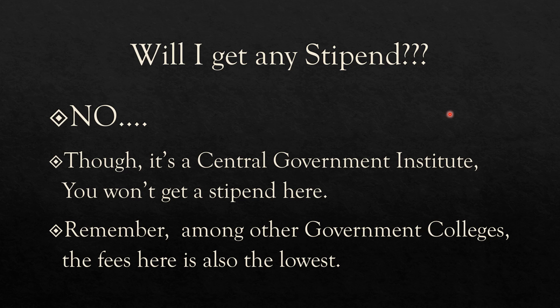The next common question is: will I get a stipend? The answer is no — since it is a central government institute, no stipend is provided. However, among other government colleges like NILD or SV Nittar, the fees at AI PMR are the lowest — around sixteen thousand including hostel fees. In contrast, NILD fees have increased to around 80-90 thousand, and that is without hostel fees, making AI PMR significantly more affordable.